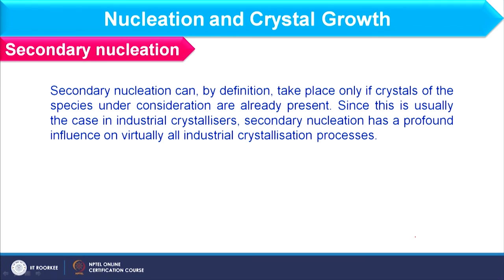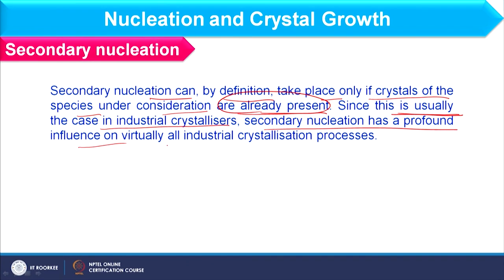Secondary nucleation can by definition take place only if crystals of the species under consideration are already present. Since this is usually the case in industrial crystallizers, secondary nucleation has a profound influence on virtually all industrial crystallization processes. At industrial level, we usually consider secondary nucleation because nuclei are already available. We will continue discussing the concept of crystallization and the design of crystallizers in subsequent lectures. Thank you.